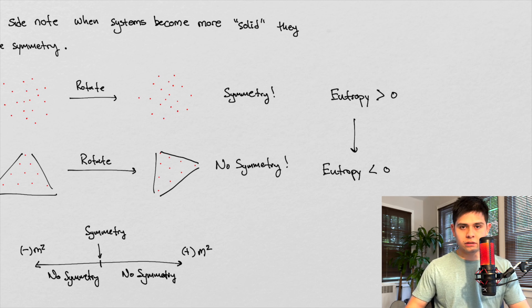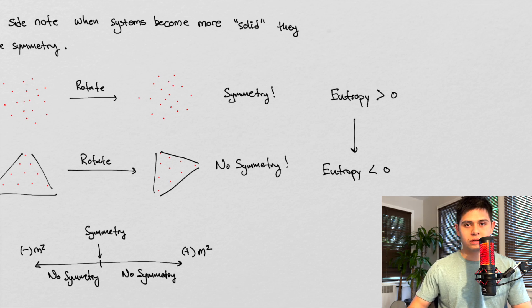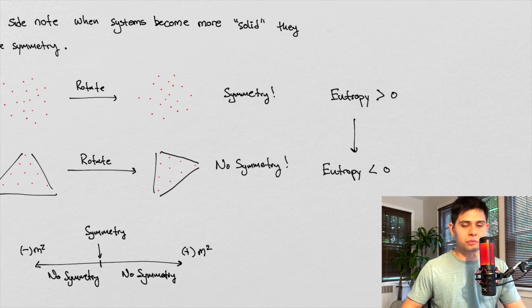And in a gaseous state, if you make a small change in one of the particles, the overall properties of the gas don't change. And so that's what's defined as high or very positive energy. Or entropy. Right? So we're starting here with symmetry, associating that with a high entropy state.